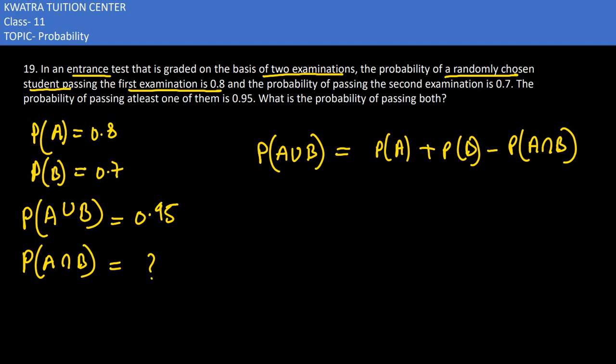So let's put all the values which are given to us. 0.95 is there. P(A) is 0.8. P(B) is 0.7.